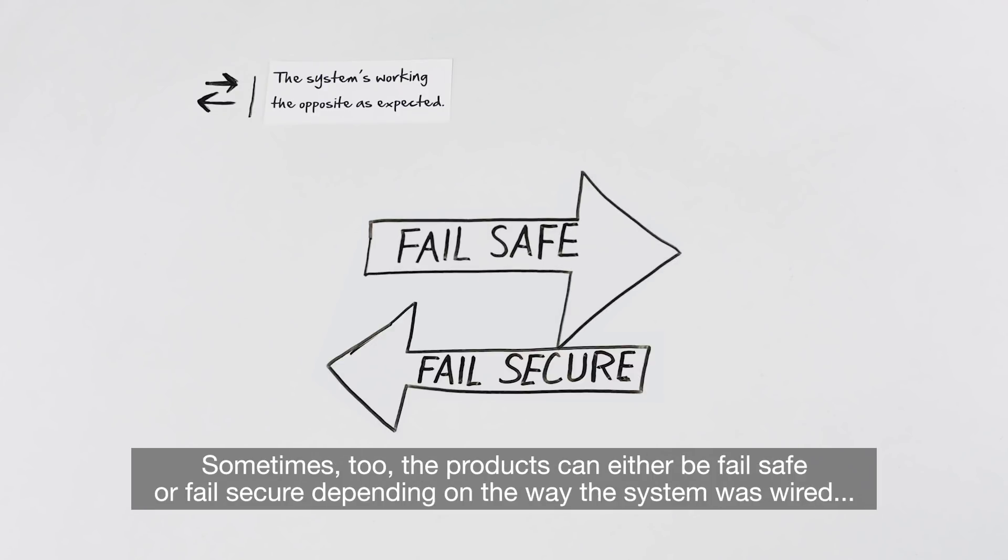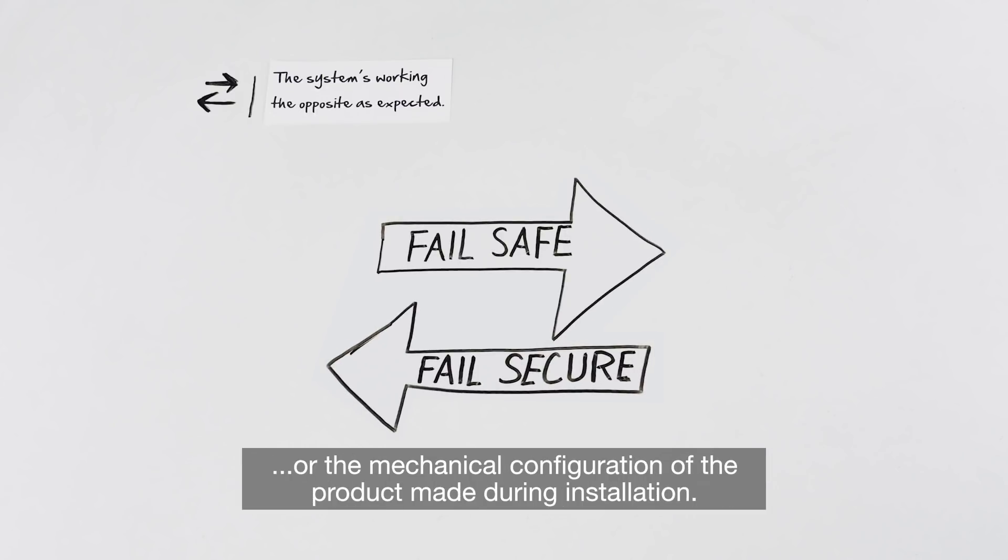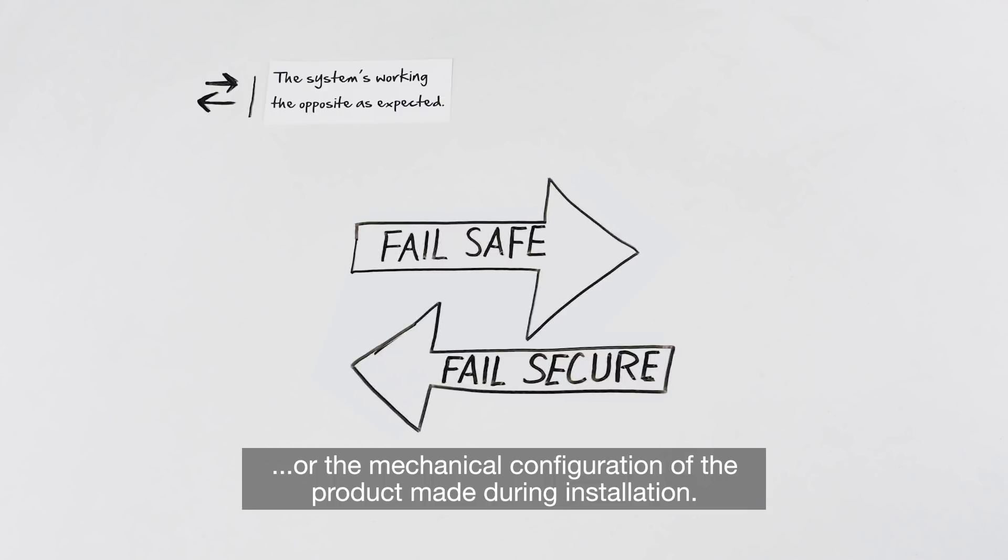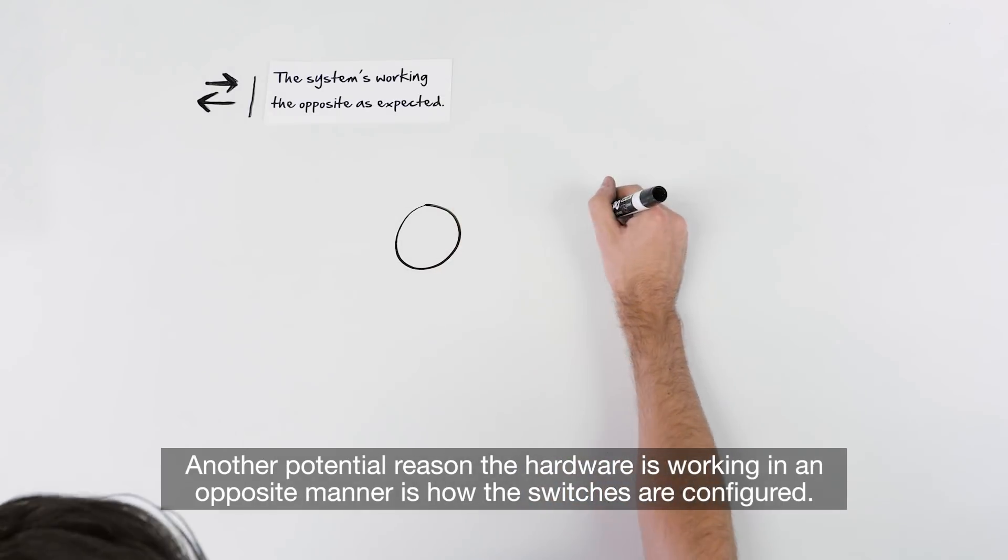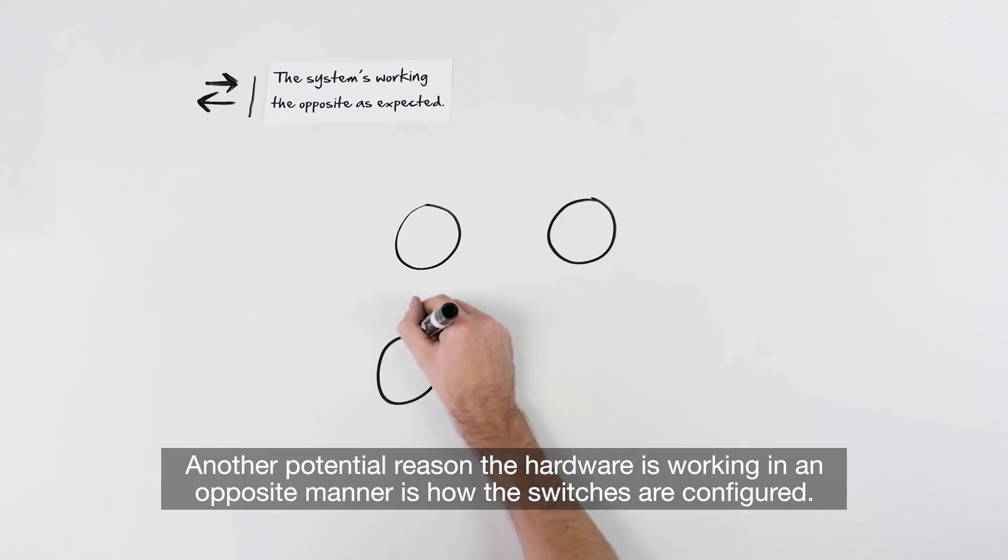Sometimes, too, the products can either be fail-safe or fail-secure, depending on the way the system was wired or the mechanical configuration of the product made during installation. Another potential reason the hardware is working in an opposite manner is how the switches are configured.